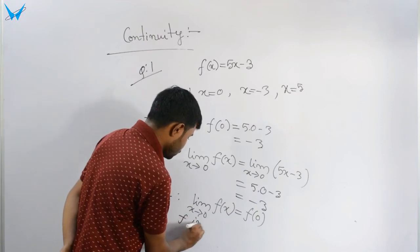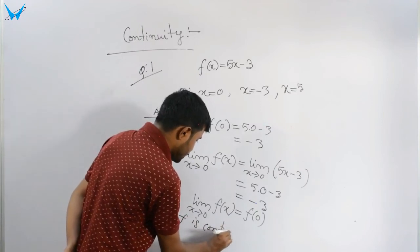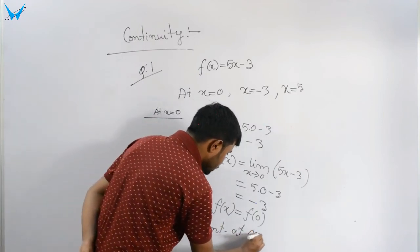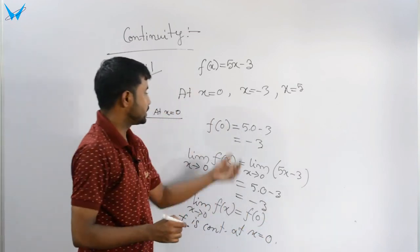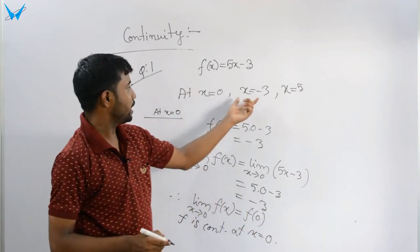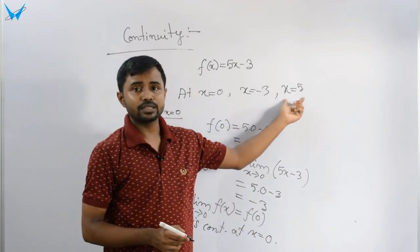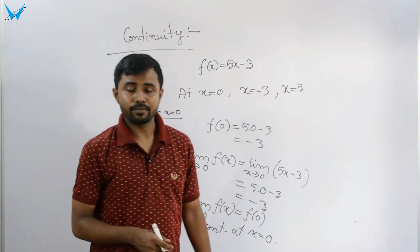f is continuous at x equal to 0. Next, at x equal to minus 3: f(x) = 5x minus 3, so f(minus 3) = 5(minus 3) minus 3.